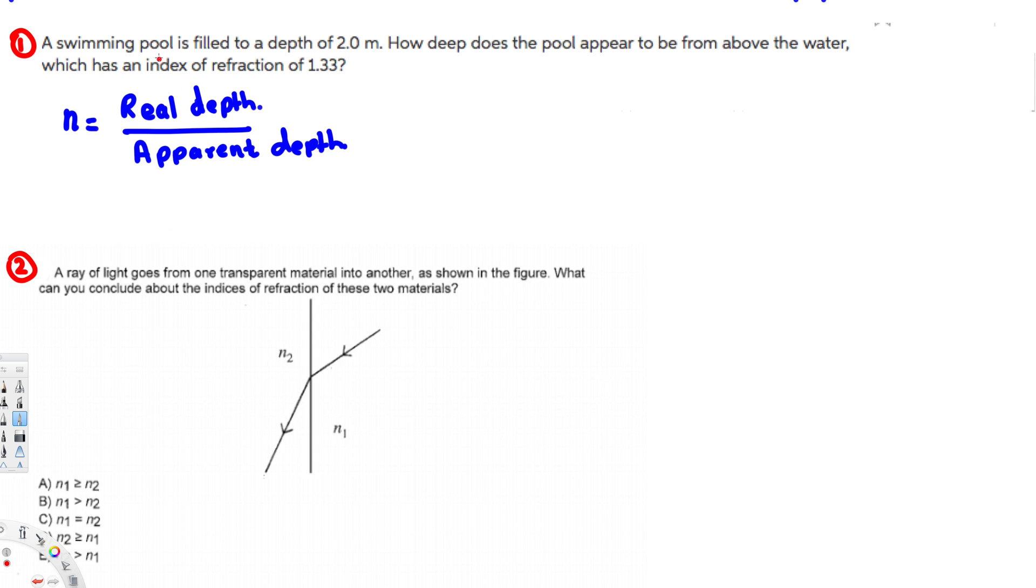If you look at this, we have real depth provided, index of refraction provided, and they are asking how deep does the pool appear. So this is the apparent depth they are asking for. So let's rearrange this equation.